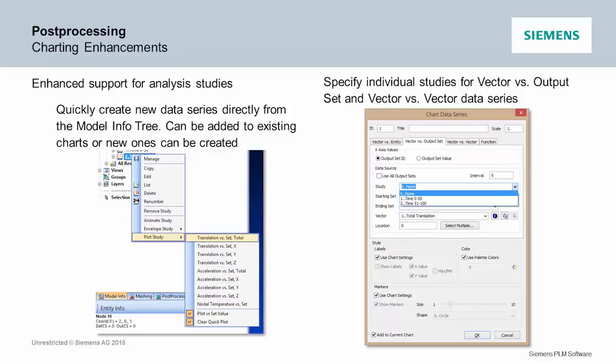We've got charting in Femap — we completely rewrote it in 11.2 and it's really nice. But when you were creating a chart with, say, 1,000 transient output sets and plotting an acceleration of a node, you used to have to create a chart, create a data series, specify the range from 1 to 1,000, and then go pick a node. Now on the studies tree, you pick the transient study, right-click, say you want a Z acceleration plot, it asks for the node, and it makes the plot. You can pick 50 nodes and it makes it all in one shot. We added translations, accelerations, and temperatures — which we thought would cover what most people want to do.